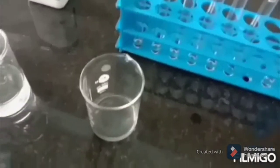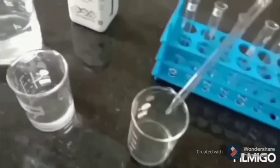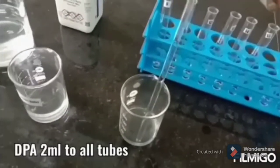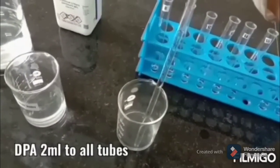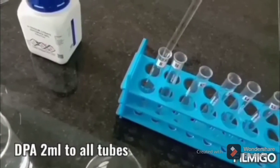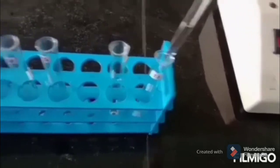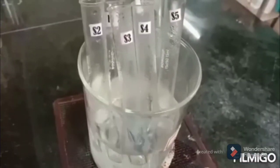Now 2 ml of DPA reagent is added to all tubes including blank, all standards, and T1, T2. This makes a total volume of 4 ml in all test tubes. This is mixed well and kept in boiling water bath for 10 minutes.